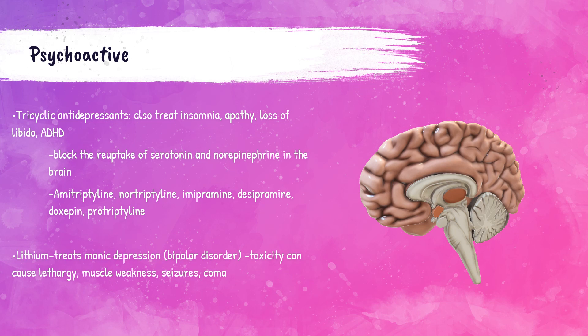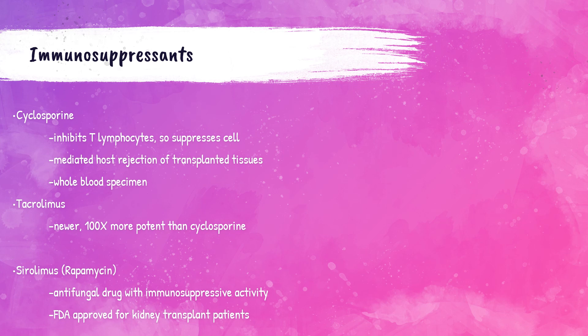Psychoactive drugs are substances that change nervous system function and result in alterations in perception, mood, consciousness, cognition, or behavior. Examples of tricyclic antidepressants are amitriptyline, nortriptyline, and protriptyline. These antidepressants block the reuptake of serotonin and norepinephrine in the brain. These drugs treat depression, but can also be used for the treatment of ADHD, insomnia, and loss of libido. Lithium is a psychoactive drug that treats manic depression, also called bipolar disorder. Toxicity of lithium can cause seizures and coma, so it's very important for patients being treated with this medication to get their lithium levels checked regularly.